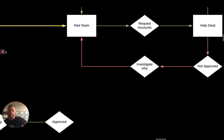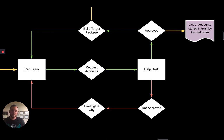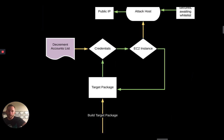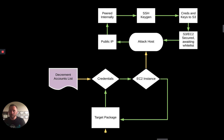If the op plan gets approved, we go into the arming phase. The red team will request accounts from helpdesk. If they get approved, they'll be held in trust — for our example, we're going to hold them in LastPass, but they'll be inactive. So you have like 10 accounts with varying sets of permissions, inactive, ready to go. That requires a relationship — if you're on a red team and want to do this, you better start learning how to talk to people. You'll have to build a relationship and sell this thing. So you get your credentials, you build your target package: you siphon off one of the credentials, build them in an EC2 instance with a public IP or peered internally, generate SSH keys just for them, push your creds and keys to S3 locked down. The attack host is sitting there waiting to go.